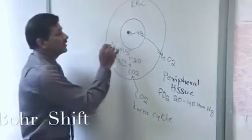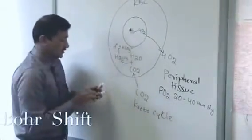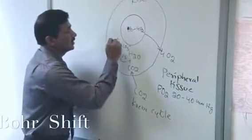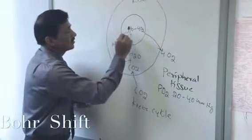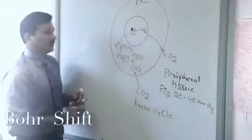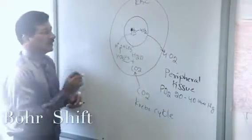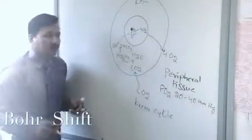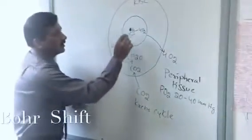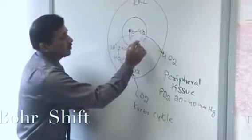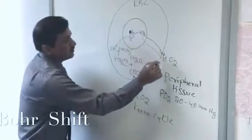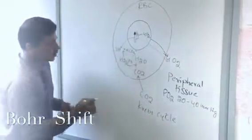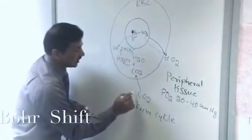These protons will go and protonate histidine residues — they will bind to the hemoglobin molecule. Basically, two protons will bind to histidine residues in hemoglobin and that will help to release four oxygen molecules. To get these two protons, let's balance the equation.